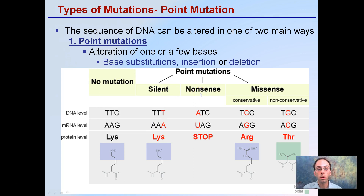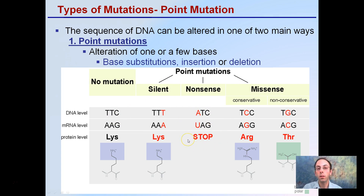There are also nonsense mutations, where TTC turns into ATC. This changes the mRNA level and causes a stop codon, which will truncate or reduce the length of the amino acid sequence and will probably make the protein nonfunctional.